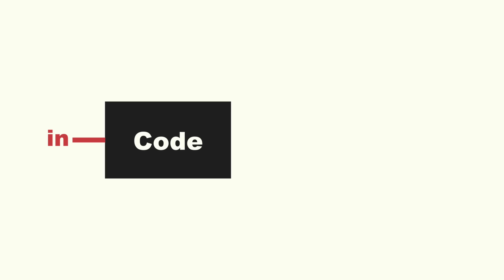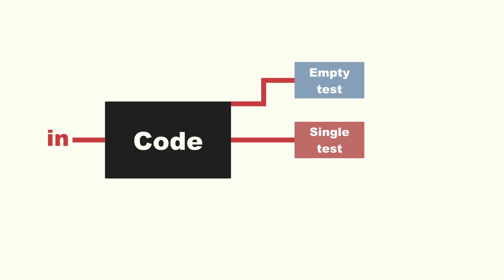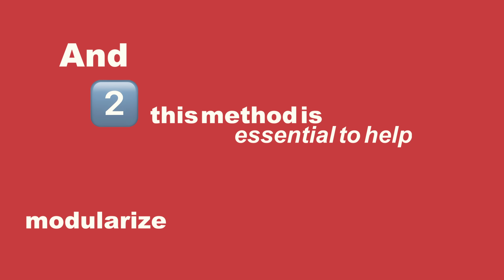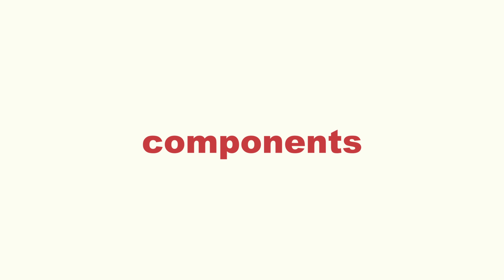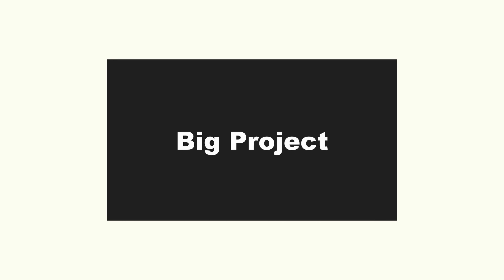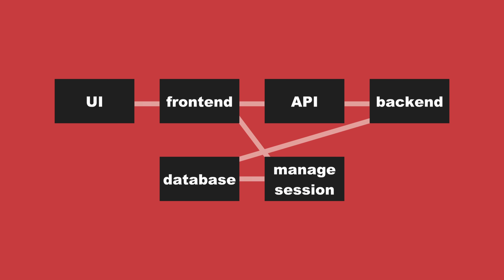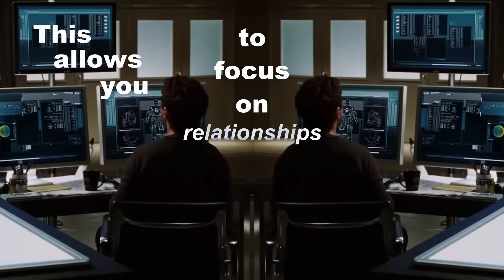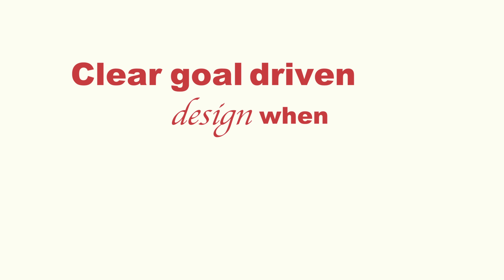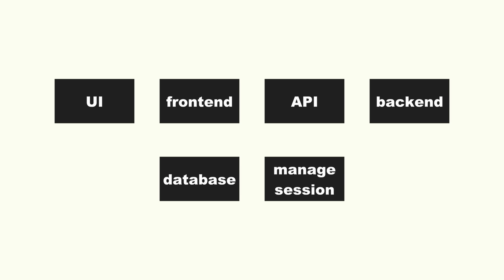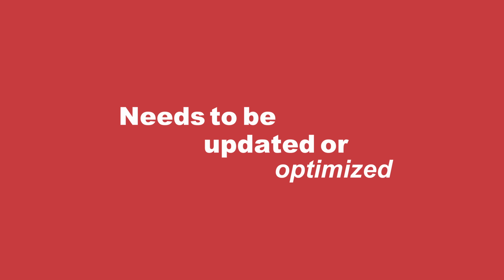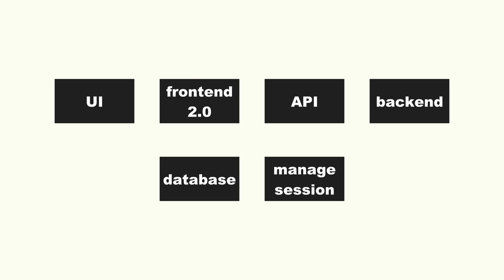This allows you to create test cases with edge scenarios like empty lists, lists with only one item, or repeating elements. And this method is essential to help modularize and scale your code. Because let's say you have a much bigger project with several components — by thinking in terms of black boxes, you naturally break your system into several independent parts that interact with each other, allowing you to focus on relationships and a clear goal-driven design. This also means that if one of these boxes needs to be updated or optimized, you can do so without affecting the rest of the system.